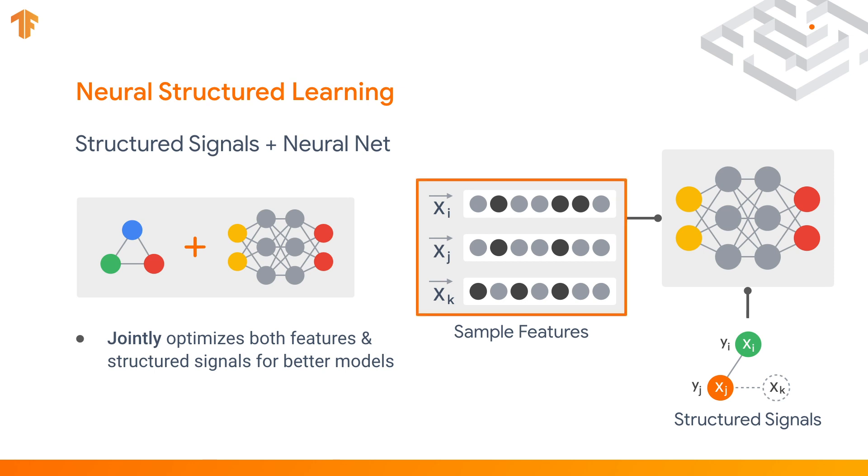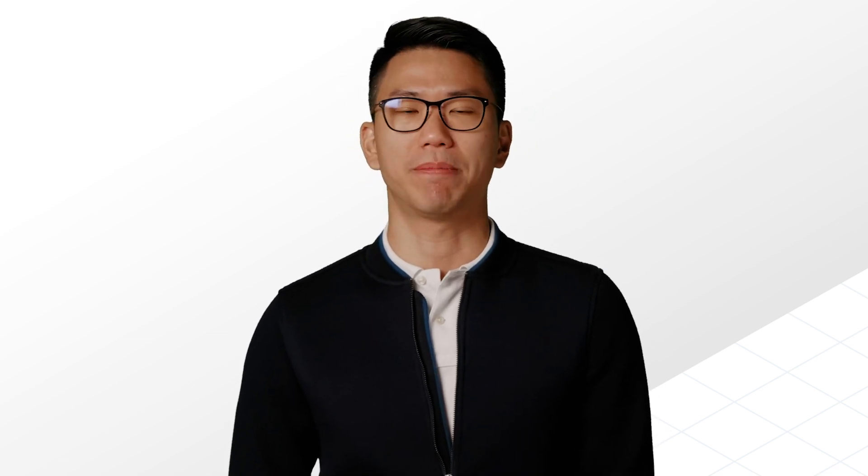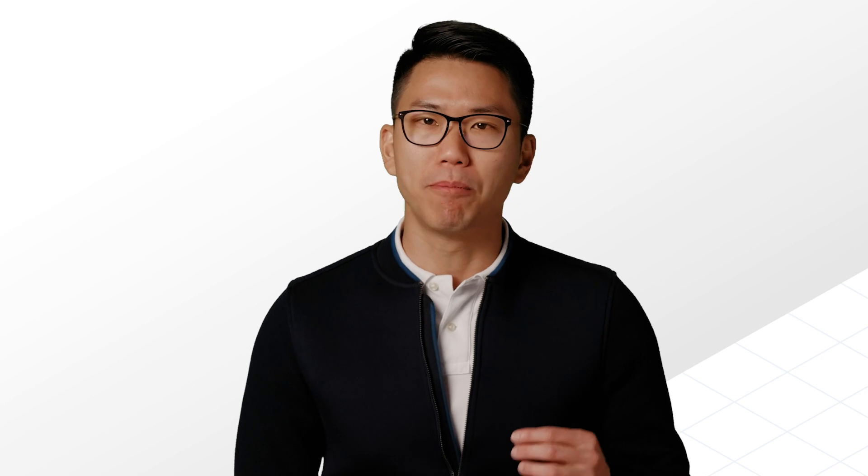Both the features and the structure will be fed into a neural net for training. You may now have a question. We know in a neural net the input features are used to activate the neurons layer by layer for making a classification. But how do we use the structure to help a neural net learn? The structure is used to regularize the training of a neural network. Don't worry if you are not familiar with this concept — we are going to provide more details about this whole training process.